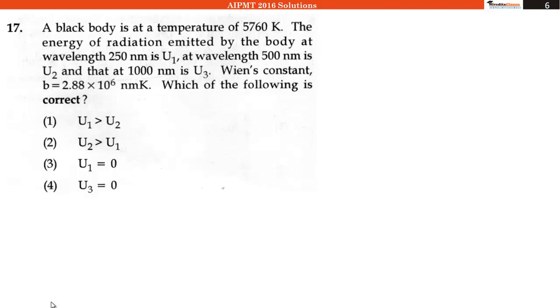Question 17 says, A black body is at a temperature of 5760 Kelvin. The energy of radiation emitted by the body at wavelength 250 nanometer is U1, at wavelength 500 nanometer is U2, and that at 1000 nanometer is U3.